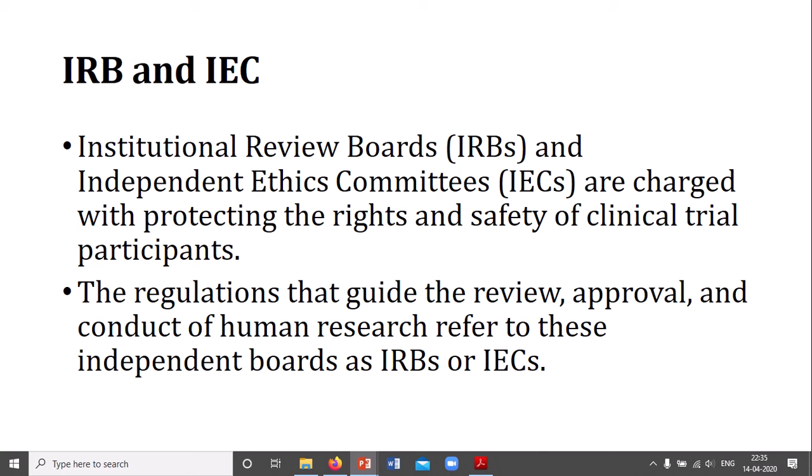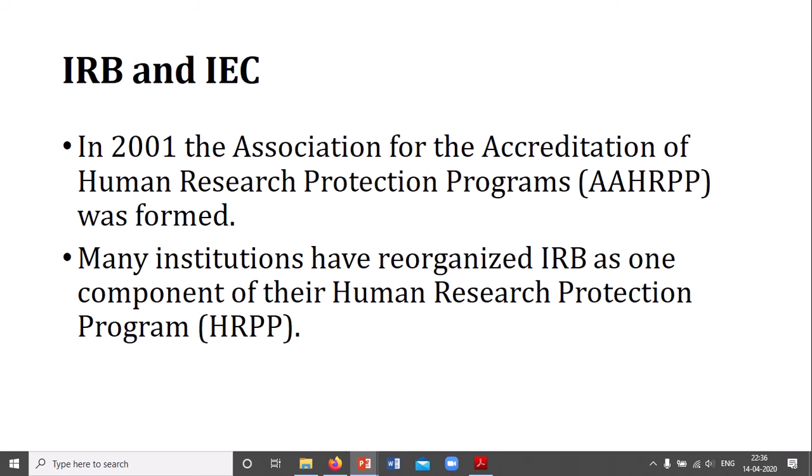These are committees having authority for the rights and safety of clinical trial participants. If any person is interested in doing a clinical trial or research on human subjects, these are governed by these bodies. All the regulations that guide the review, approval, and conduct of human research are referred by these independent boards — IRB and IEC. Starting from 2001, the Association for the Accreditation of Human Research Protection Programs was formed, and many institutions have since recognized the IRB as a component of their human research protection program, making it essentially mandatory.